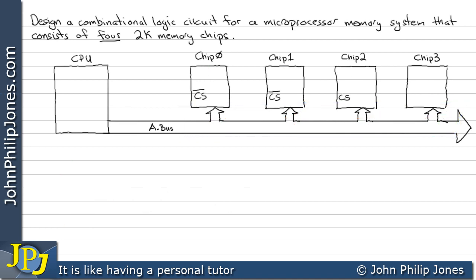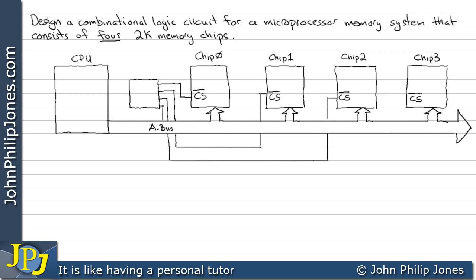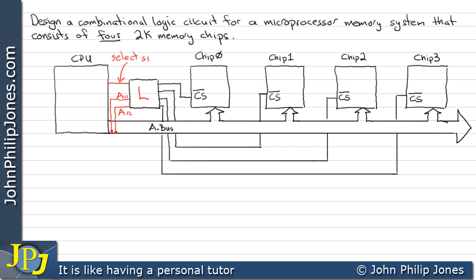Each chip has a chip select. We need to build a logic circuit whose outputs go to each chip select, ensuring that at any one time only one chip is switched on and all others are switched off. To the input of the logic circuit I'm going to take a tap off the address bus — A11 and A12 — and this line will be the select signal, which we can think of as being 0.